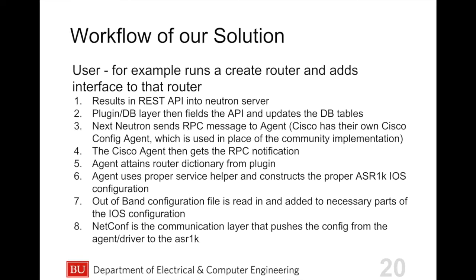The workflow of the solution: the user creates a router and adds an interface to that router. A REST API is used in the Neutron server, which contacts the plugin DB layer, fields the API, and updates the database tables. Neutron then sends an RPC message to the agent. Cisco has their own config agent, different from the community implementation. The Cisco agent gets the RPC notification, attains the router dictionary from the plugin, and uses the proper service helper to construct the ASR1K iOS configuration. The out-of-band configuration file is read in and added to the iOS configuration. Netconf is the communication layer that pushes the config from the agent driver to the ASR1K.